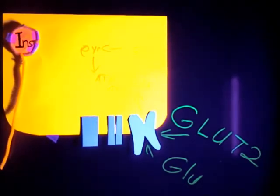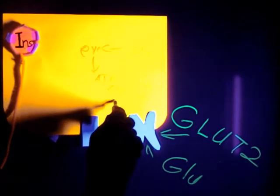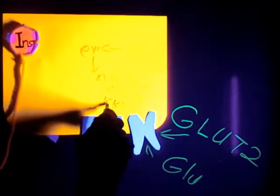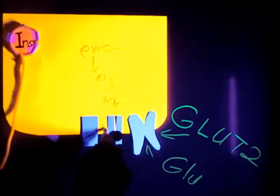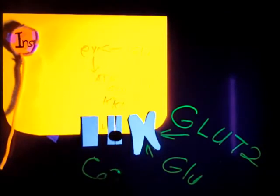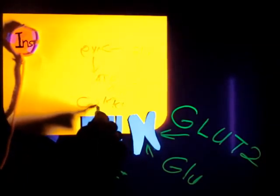ATP sensitive potassium channels on the cell membrane close reducing efflux of potassium ions and raising the voltage potential in the interior of the cell. The potential rise triggers voltage sensitive calcium channels on the cell membrane to open allowing the cytosolic calcium concentration to increase.